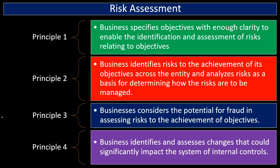Principle number four: the business identifies and assesses changes that could significantly impact the system of internal controls. Anytime we have a significant change, we should consider what the internal control implications are, map out the associated risks, and make adjustments as necessary based on those changes and the adjusted risks.